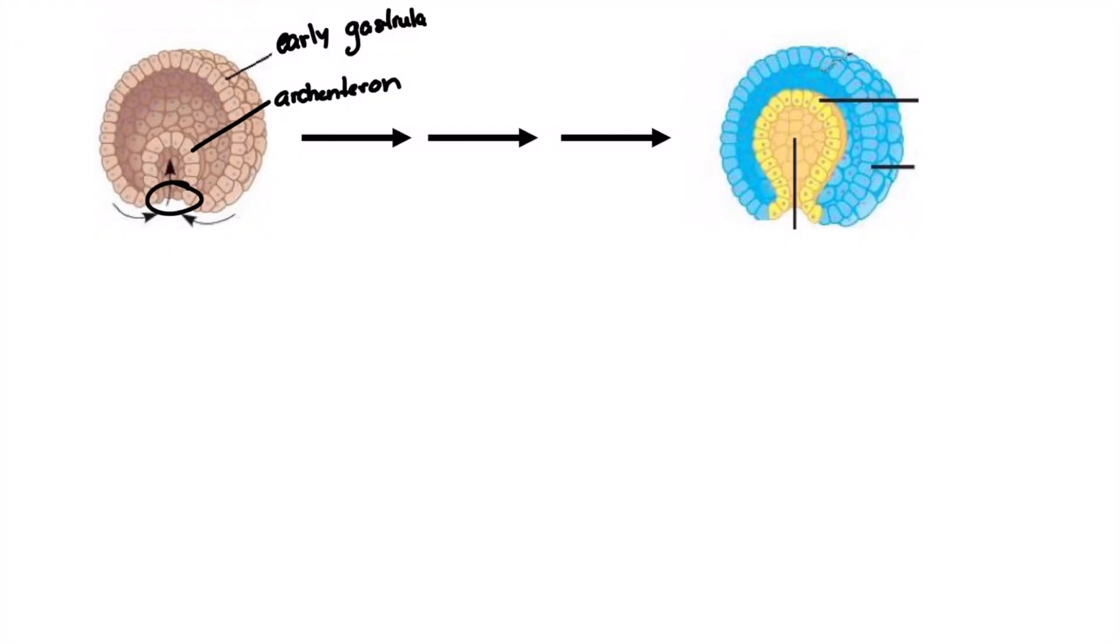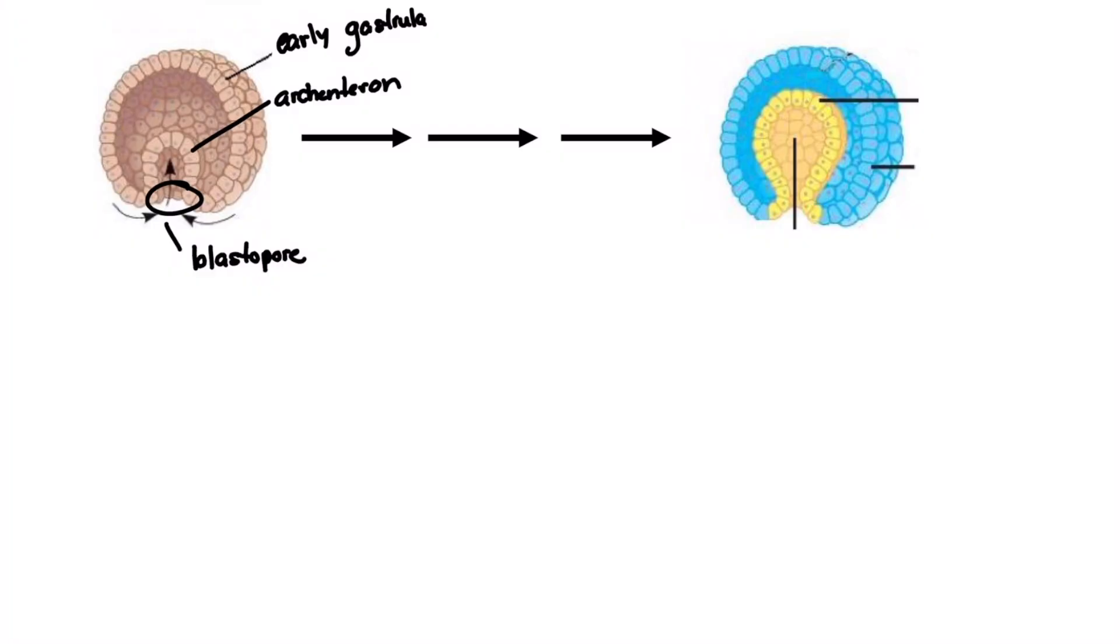The open end of the archenteron, and the first opening formed in the embryo, is the blastopore. The blastopore is important because this will either become the mouth or anus, depending on the type of triploblastic organism we are talking about.